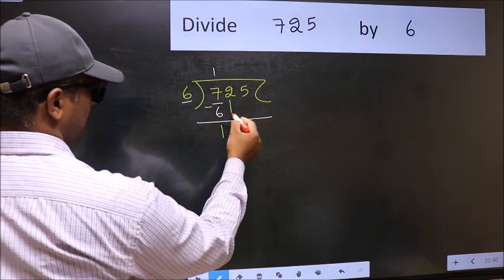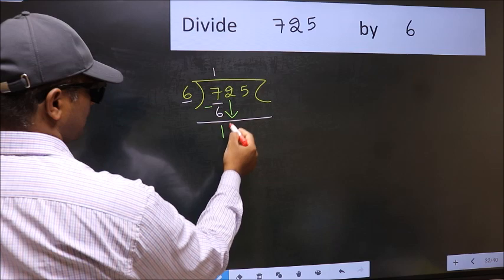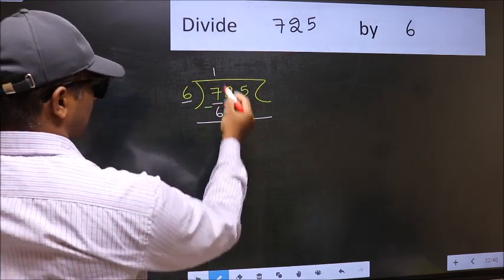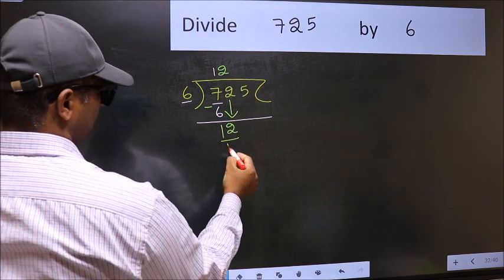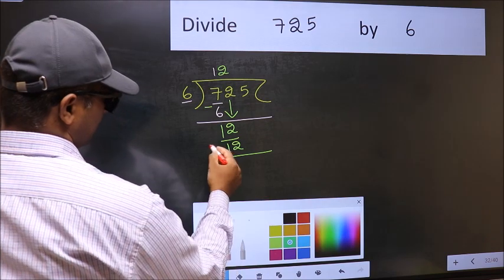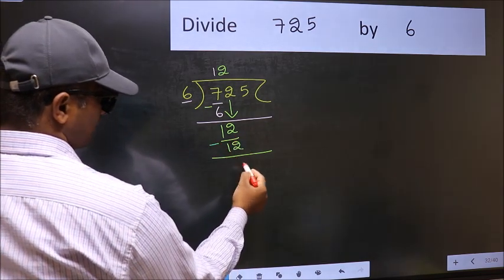After this, bring down the beside number. So 2 down. Now 12. When do we get 12 in the 6 table? 6 twos, 12. Now you should subtract. 12 minus 12, 0.